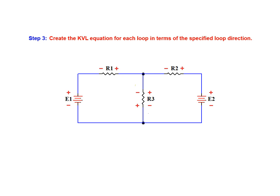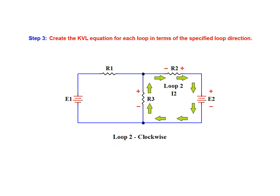Next, we construct the KVL equation for loop 2 in the same manner. Starting in the upper left corner of loop 2, we move clockwise around the loop. For VR2, we're moving from negative to positive, so the value is added. When we reach the E2 voltage source, we're moving from positive to negative polarity, so the value of E2 is subtracted. For VR3, we're moving from negative to positive, so the value is added, and the entire equation is set equal to zero.